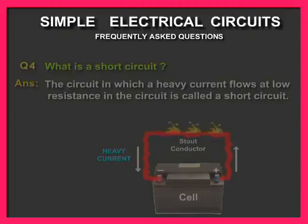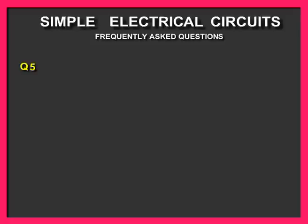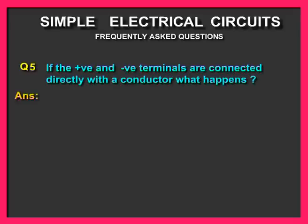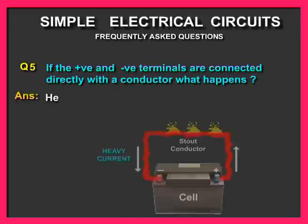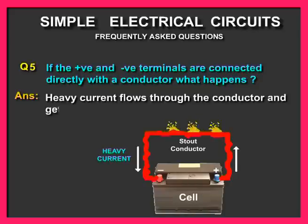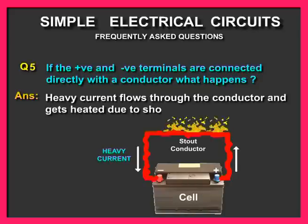Question number five: If the positive and the negative terminals are connected directly with a conductor, what happens? Answer: Heavy current flows through the conductor and it gets heated due to the short circuit.